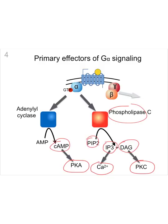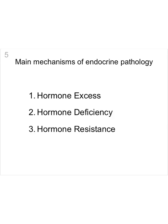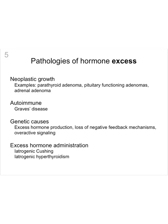The main mechanisms of endocrine pathology can be broken down into hormone excess, hormone deficiency, and hormone resistance. Pathologies of hormone excess can be caused by neoplastic growth within a hormone-producing tissue — for example, parathyroid adenomas producing too much parathyroid hormone, pituitary functioning adenomas producing one or more pituitary hormones in excess, or adrenal adenomas producing too much adrenal hormone.